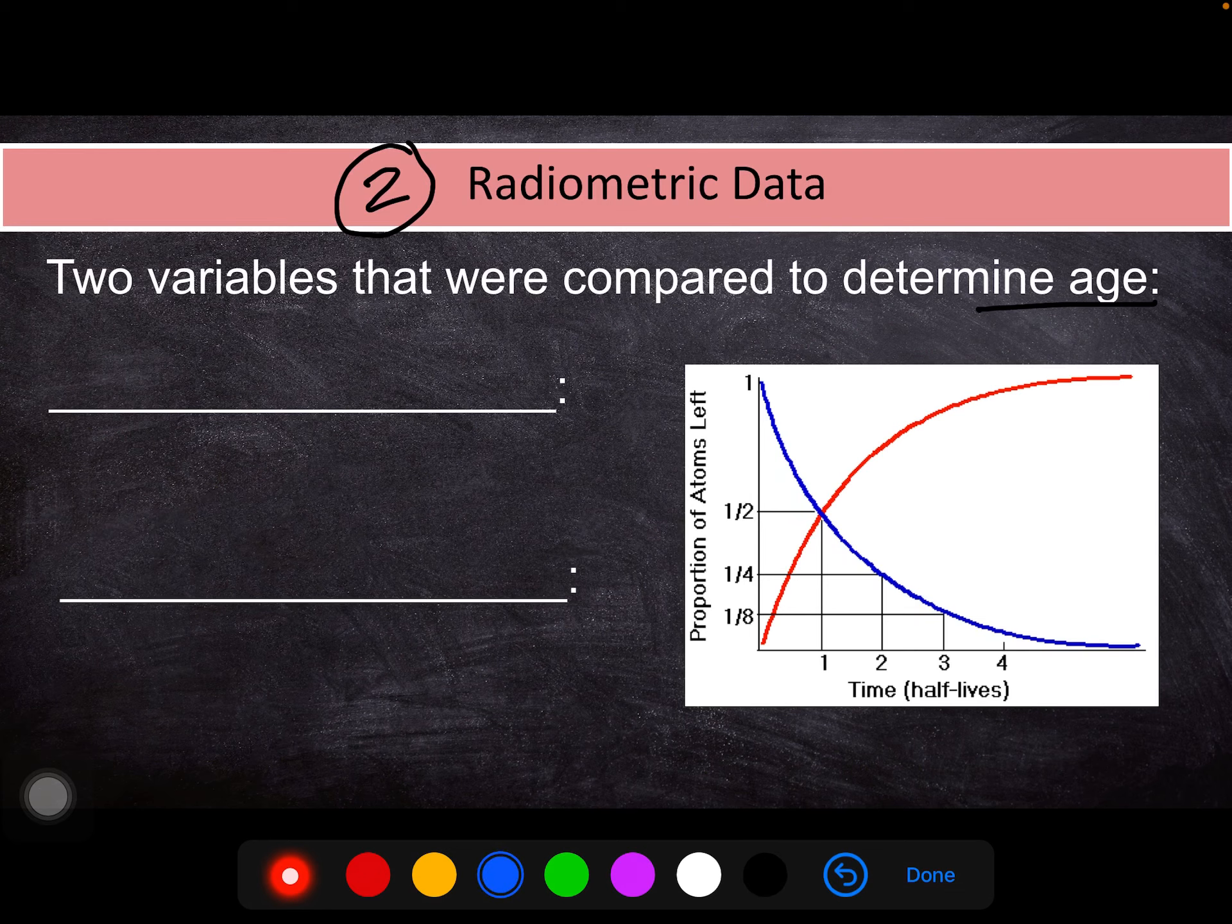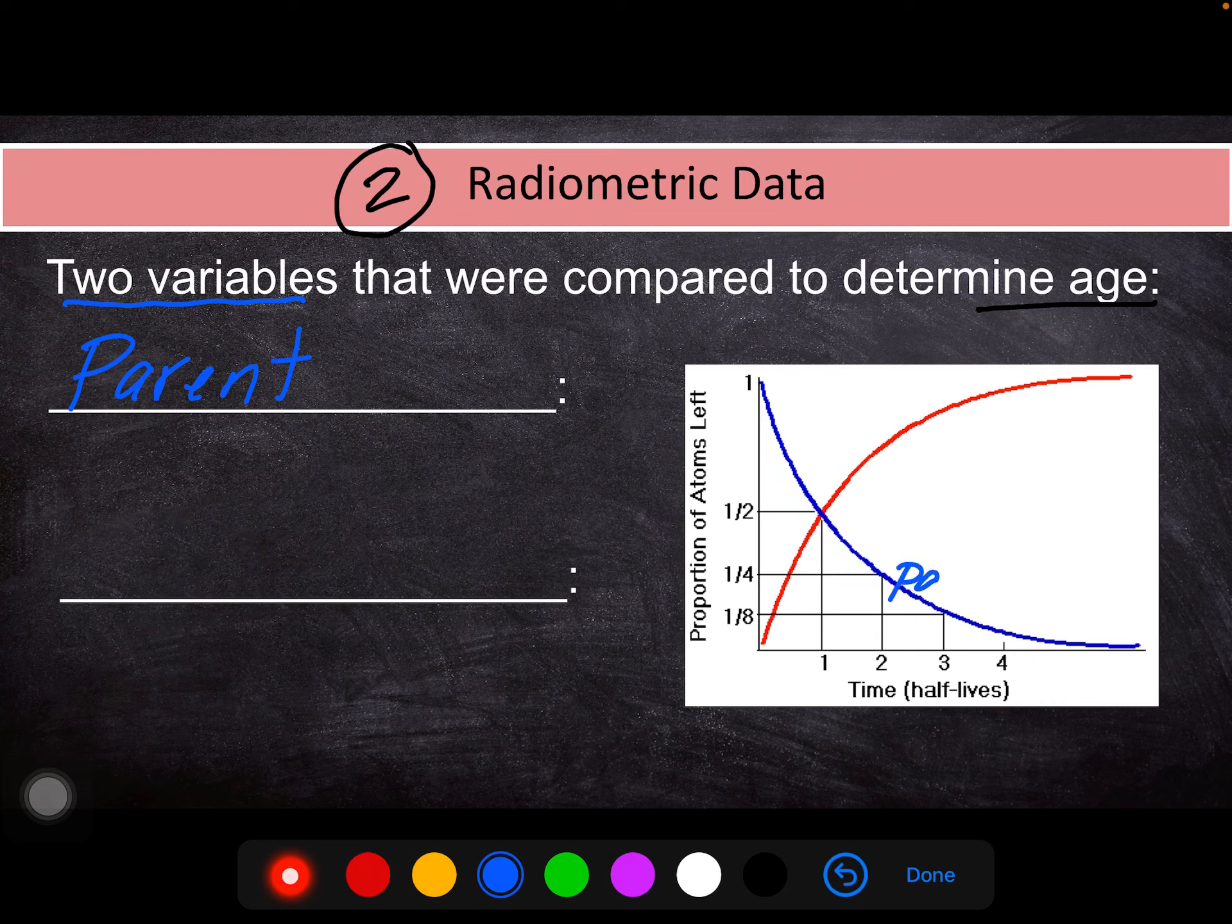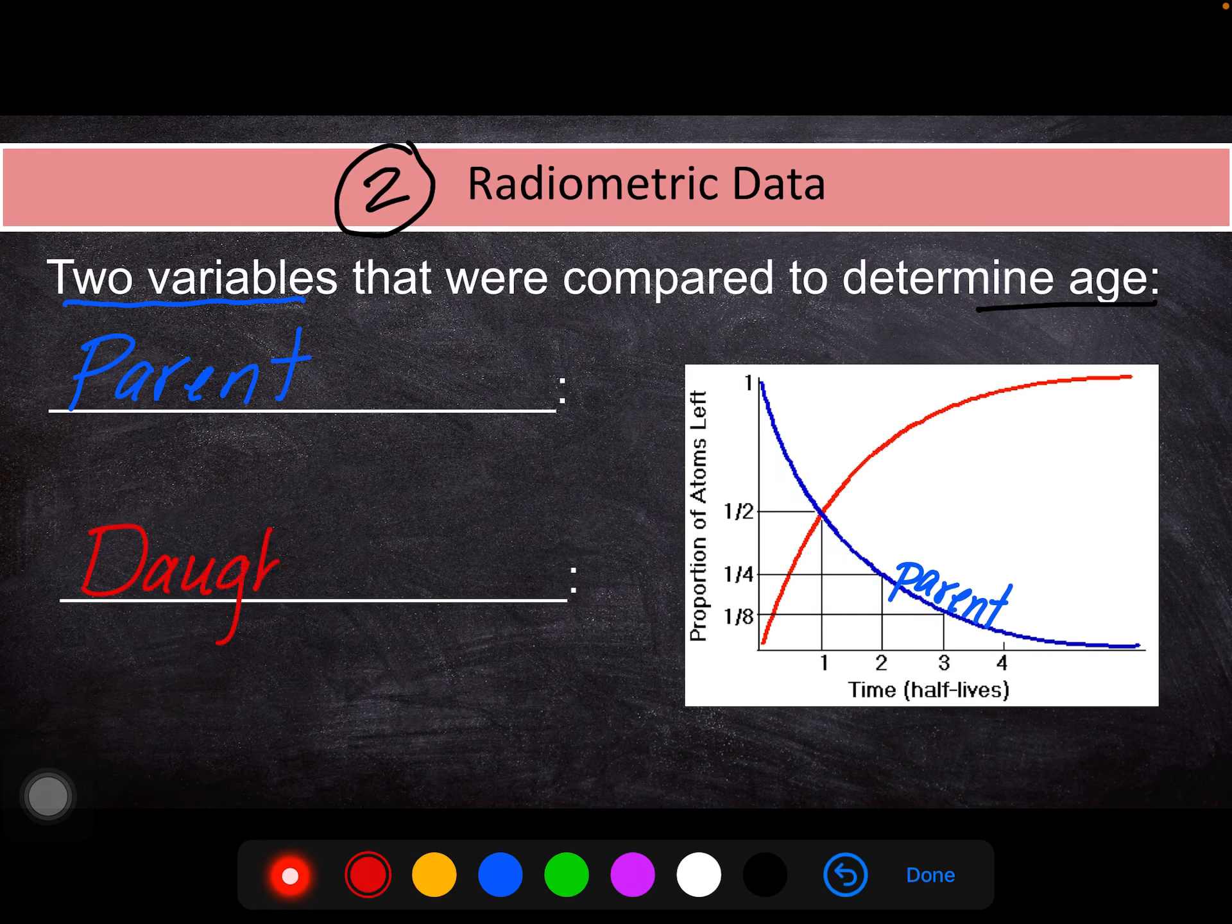So in order to do that, we had two variables that we were investigating, and when we did our penny lab, we were seeing these variables as pennies. We had one known as the parent material, and that is shown on our graph over here with the blue line, and one known as daughter material, and that's our red line.